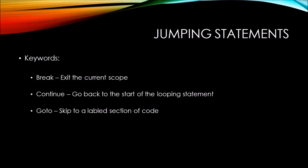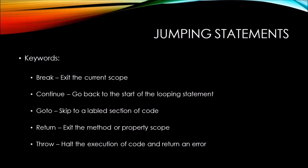The goto keyword skips to a labeled section of code — you can have a specific section of code that's marked and labeled, and the goto keyword will skip to that specific section. The return keyword exits a method or property scope. We haven't dealt with methods or properties very much yet, and we will extensively once we start working with class objects. Just understand that the return keyword exits the current method or property scope, such as the main method. Finally, there's the throw keyword, which halts the execution of code and returns an error. Throws can be handled within code to continue execution, but in general they're used to display some sort of problem within the application to the user.